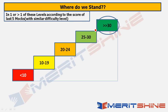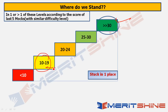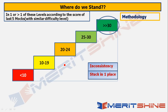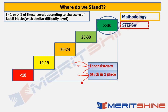The problem most people face is getting stuck in one place — say, 10 to 19 — and not being able to increase the score. Or there is inconsistency: sometimes 17-18, sometimes 27, sometimes more than 30. Inconsistency and getting stuck in one place are the two situations we face in mocks and exams in general. The methodology here is directed towards breaking this jinx.